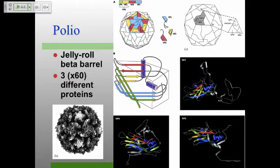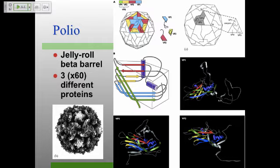There are 60 copies of VP4 as well — it's on the inside of the structure. All of these proteins are made together as one protein, so you always have the same amount of each. T equals 3: take the T number, multiply by 60, giving 180 capsid protein subunits. VP4 sits on the inside relative to VP1, at the five-fold axis of symmetry. VP4 is probably mostly important for getting the virus genome inside the cell.